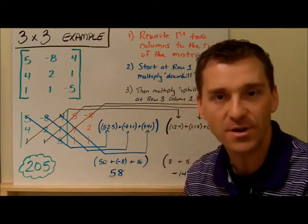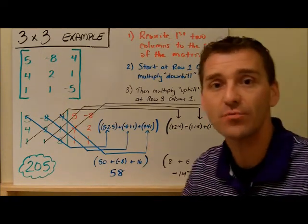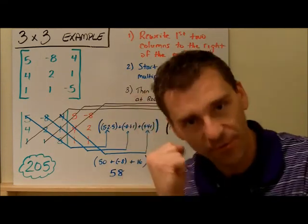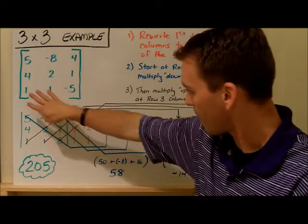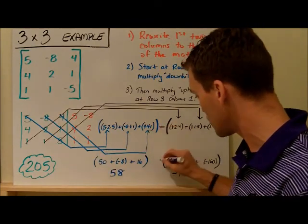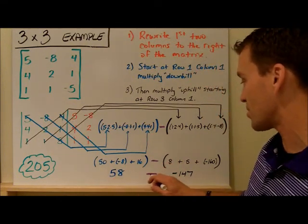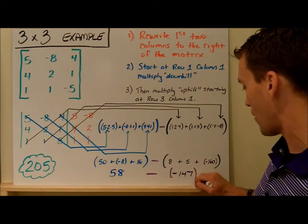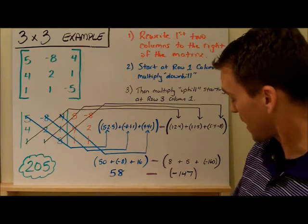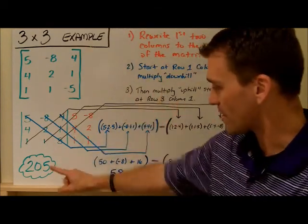I am not done yet — I'm pretty close though. This is my last step, just like we did in the two by two. Remember, there is a difference between multiplying downhill and multiplying uphill, so you have to find the difference of those two things. So it's fifty-eight subtract away negative one forty-seven. When I do that, it's fifty-eight really plus one forty-seven, and fifty-eight plus one forty-seven is two hundred and five. There's your answer — two hundred and five!